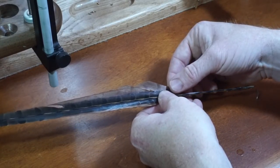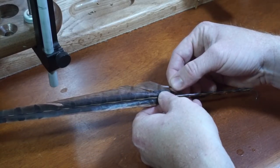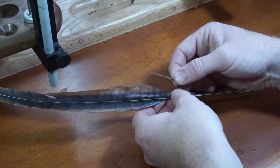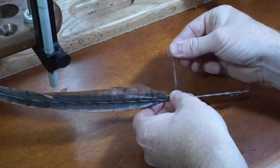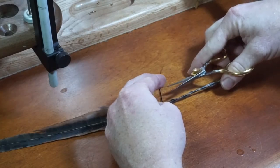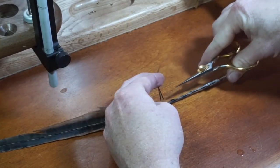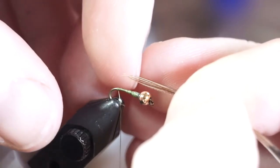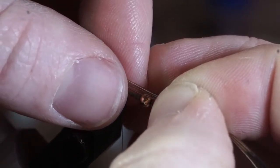Now pull off 3-6 strands of pheasant tail fibers. The quantity of strands will depend on your hook size. Pull the fibers parallel to the feather's spine and stroke them up to align the tips. Then clip them off at the base. Measure out about a hook shank length and tie it in at the base of the hook.